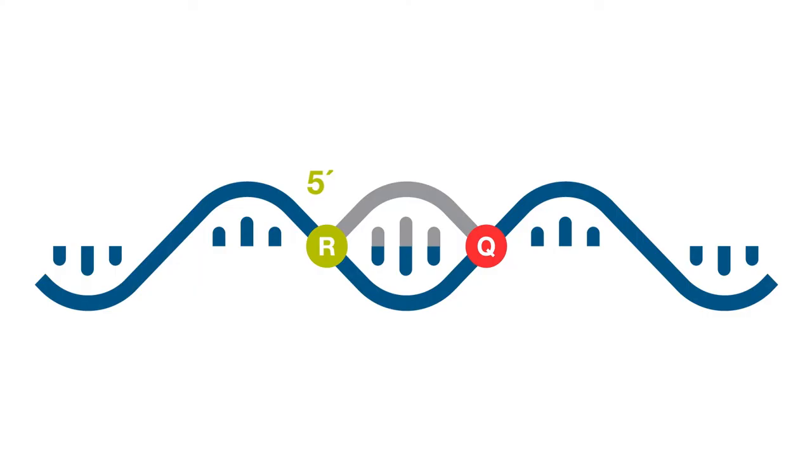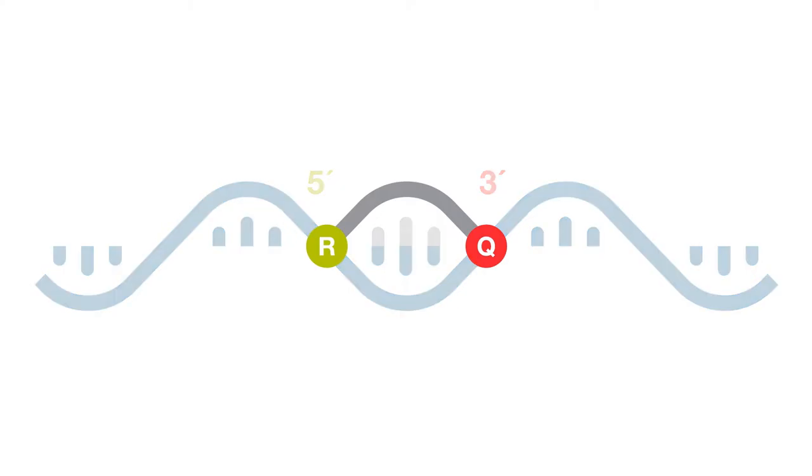I call it that because it reports a signal to us as we generate more and more product. On the three prime end is a molecule known as a quencher, which quenches the fluorescent signal from the reporter under certain circumstances. Well, let's see what those circumstances are.